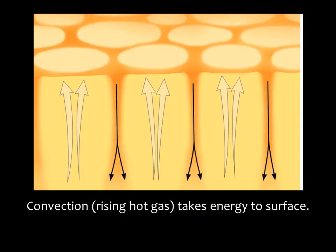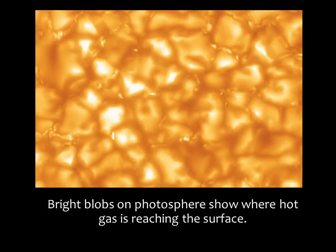The convection zone is right below the photosphere, and the rising of hot gas and sinking of cool gas gives the photosphere a mottled appearance. This is a close-up of the photosphere. Those bright spots are about a thousand kilometers across.